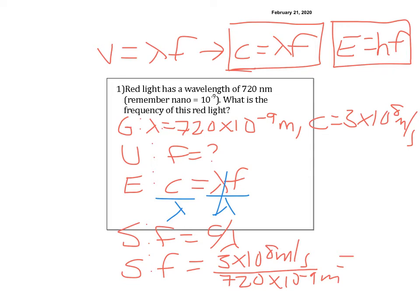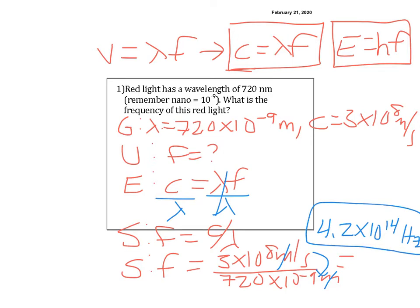The meters cancel with meters, and the per second comes to the bottom. Plugging into the calculator gives us 4.2 times 10 to the 14th — 1 over seconds is the same as Hertz. You can see it has a very small wavelength and a very large frequency because they're inversely related.